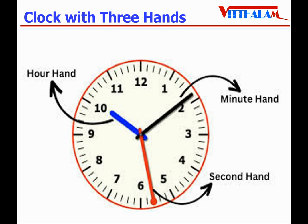In many clocks, apart from the hour hand and the minute hand, there is a third hand known as the second hand. The second hand makes a full round in one minute, and the time in which it moves between two successive small divisions is known as one second. Therefore, 60 seconds equals one minute.